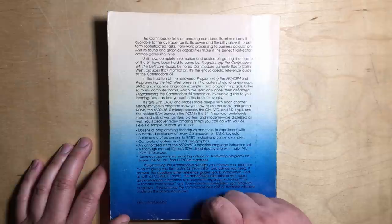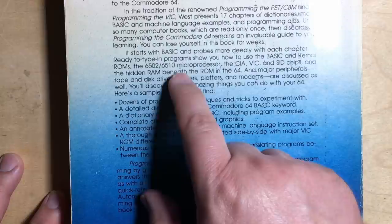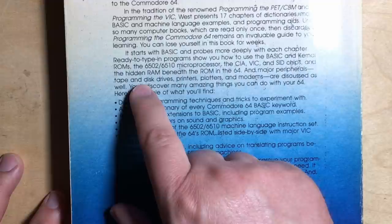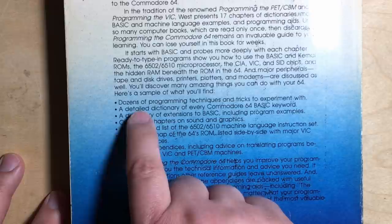It starts with BASIC and probes more deeply with each chapter. Ready to type in programs show you how to use BASIC and Kernel ROMs, the 6502-6510 microprocessor, the CIA, VIC, and SID chips, and the hidden RAM beneath the ROM in the 64. And major peripherals, tape and disk drives, printers, plotters, and modems are discussed as well. You'll discover many amazing things you can do with your 64. Here's a sample of what you'll find.